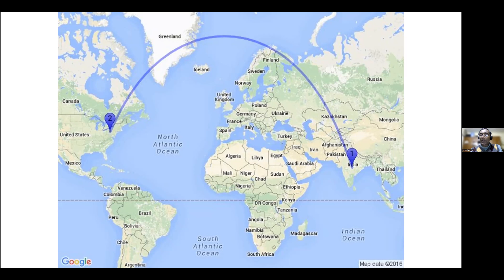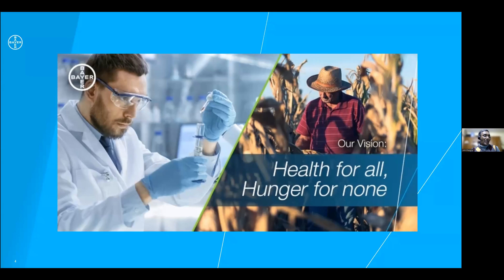At that time, Monsanto — which was later bought by Bayer in 2018 — had opportunities in Bangalore. Mostly through my network and contacts, I knew about these roles, as they may not have been advertised. I needed to identify the real skills required and, while I had all the molecular skills they asked for, I also needed to develop and project my soft skills. I did that, got the job, and decided to move back to India, leading a lab supporting the launch of biotech traits in India.